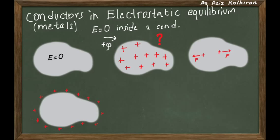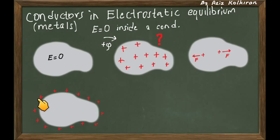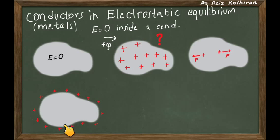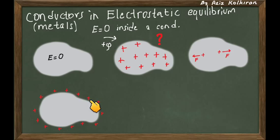So the charges will somehow distribute themselves on the surface. Because on the surface — on the boundary — there is no place to go, no room to move anymore. They will reside on the outer surface, localizing themselves without motion on the outside surface of the conductor. If the conductor has a volume, then this is the case. Even if the conductor has some cavity inside, the situation is the same, but what happens to the inner surface we will analyze later.